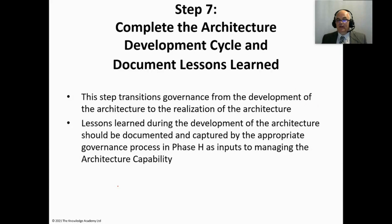Step seven: complete the architecture development cycle and document lessons learned. This step transitions governance from the development of the architecture to the realization. Lessons learned during the development of the architecture should be documented and captured by the appropriate governance process in Phase H, where that information can be used to better manage projects in the future.